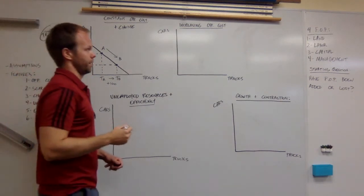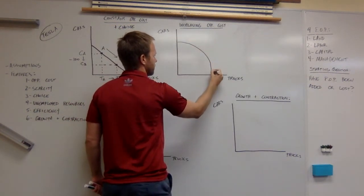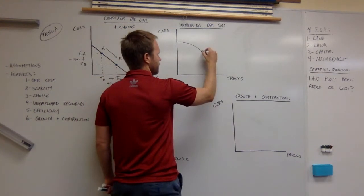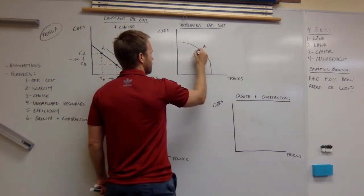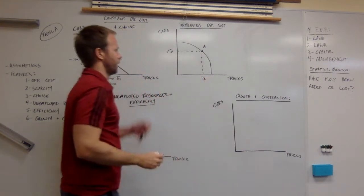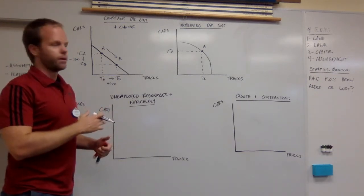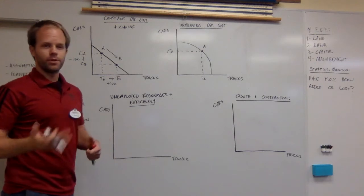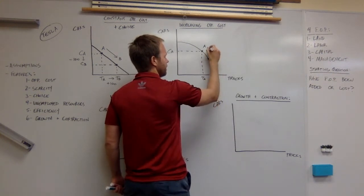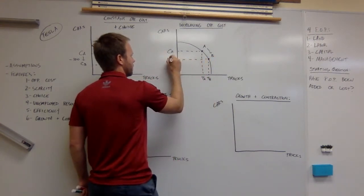Let's get to what increasing opportunity cost looks like. This is actually going to be shown as a curve. Let's say to start, we're right in the middle here, point A. Again, CA for cars at point A, trucks at point A. Now let's say Tesla makes that same decision. They're going to choose to give up some cars in order to make more trucks. Well, the opportunity cost is going to change. Let's say they move from point A to point B here. Trucks at point B, cars at point B.